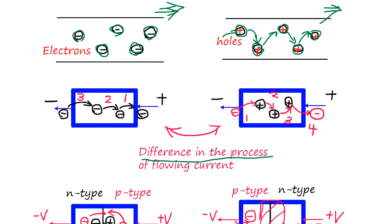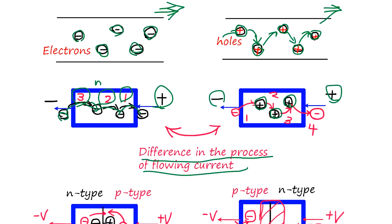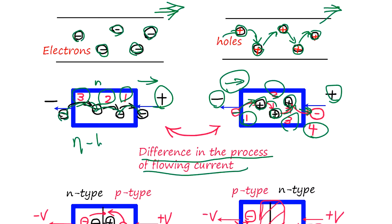The difference in the process of flowing current is very important. N-type has more electrons, so when you apply a voltage, electrons move out and new electrons are injected - the process is kind of positive-side driven. But when you have holes, you apply plus voltage one side and negative voltage the other, then electrons get into the hole and hop to the next one - it's negative-side driven. So the mechanism of current flow is different between N-type and P-type.